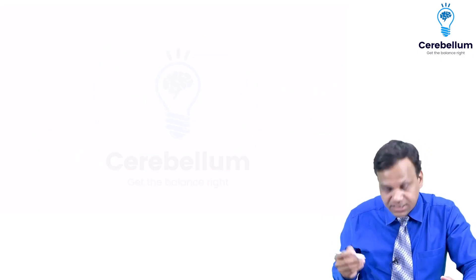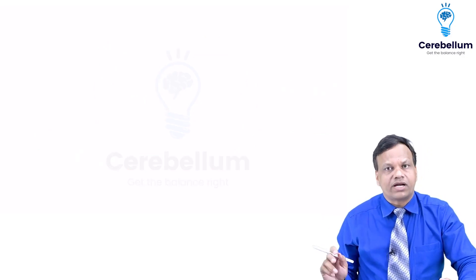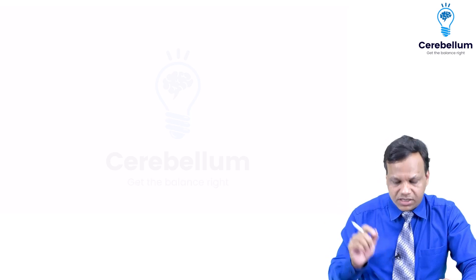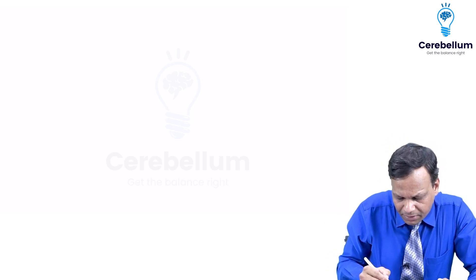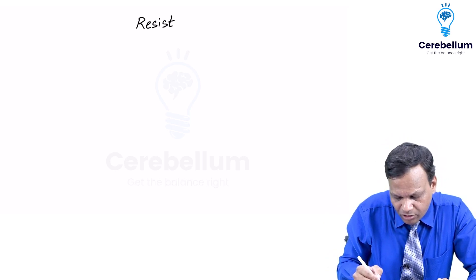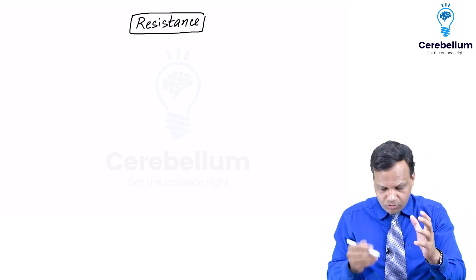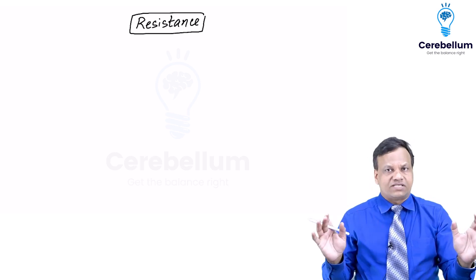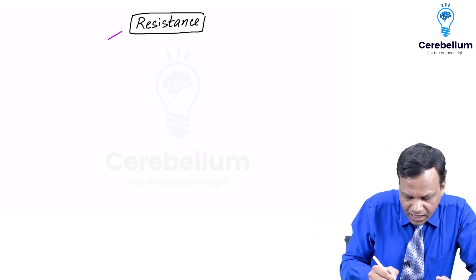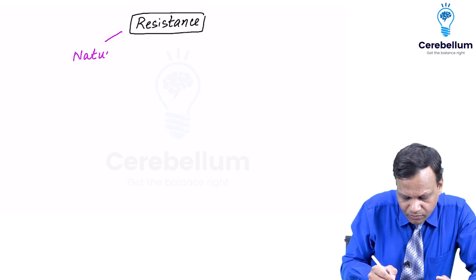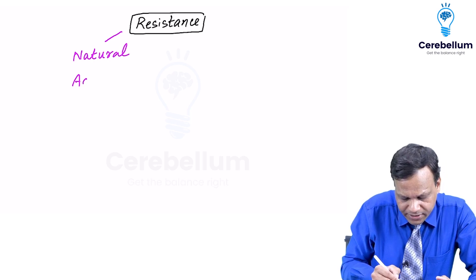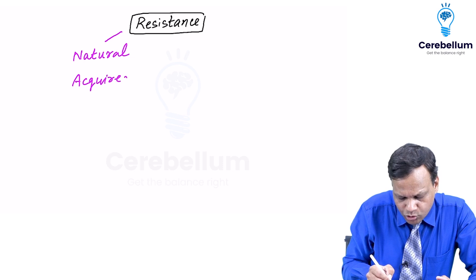We can now discuss the second important thing in antimicrobials: antimicrobial resistance and development of resistance to antimicrobials. There are two types of resistance: natural resistance and acquired resistance.